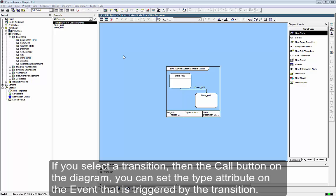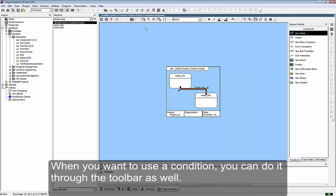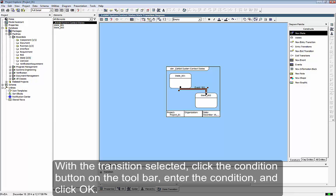If you select a transition, then the call button on the diagram, you can see the type attribute on the event that is triggered by the transition. When you want to use a condition, you can do it through the toolbar as well. With the transition selected, click the condition button on the toolbar, enter the condition, and click OK.